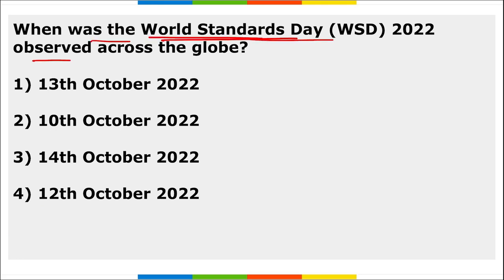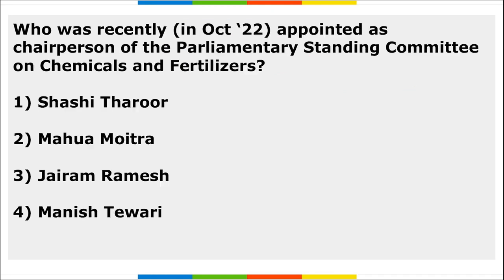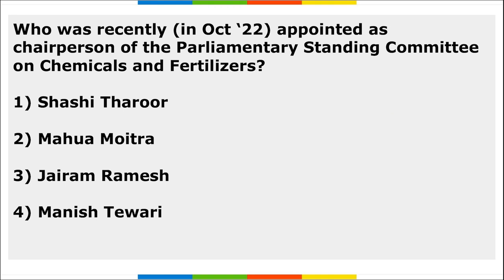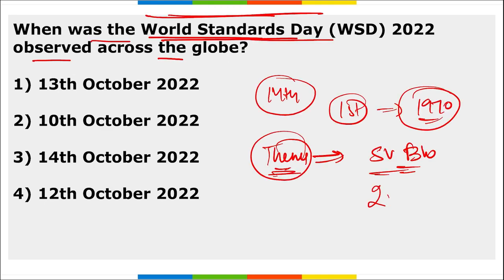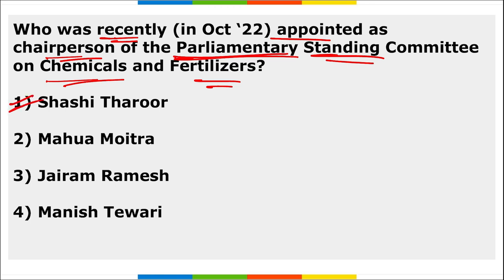World Standards Day is observed on 14th October. The first ever World Standards Day was observed in 1970. The theme for 2022 was 'Shared Vision for a Better World.' Shashi Tharoor was appointed as the Chairperson of the Parliamentary Standing Committee on Chemicals and Fertilizers.